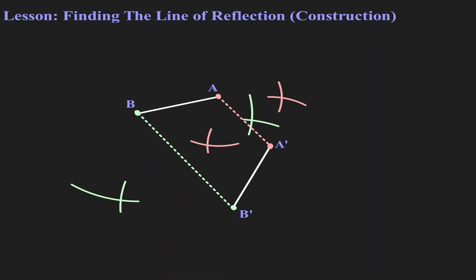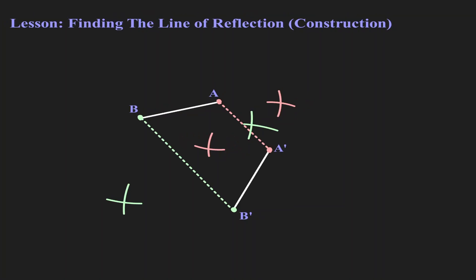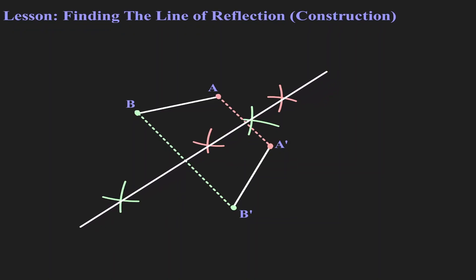Let's just clean this up a little bit. Notice that all of those marks line up — we can find a line that passes through those four intersections that we have just found. Let's create that line. This line that we have just created is the line of reflection that we were looking for. So we are done.